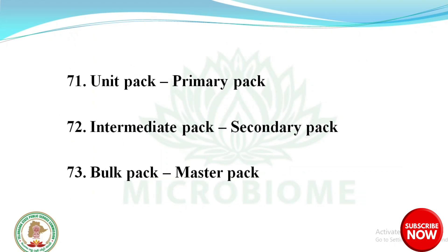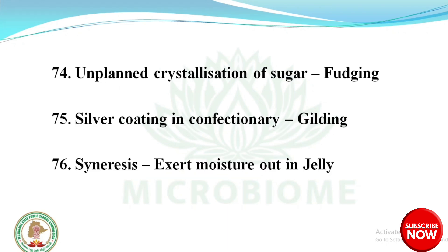Unit pack is the primary pack. Intermediate pack is called secondary pack. Bulk pack is called master pack. Unplanned crystallization of sugar is called fudging. Silver coating in confectionery is called gilding. Syneresis is observed in jelly due to moisture exertion.